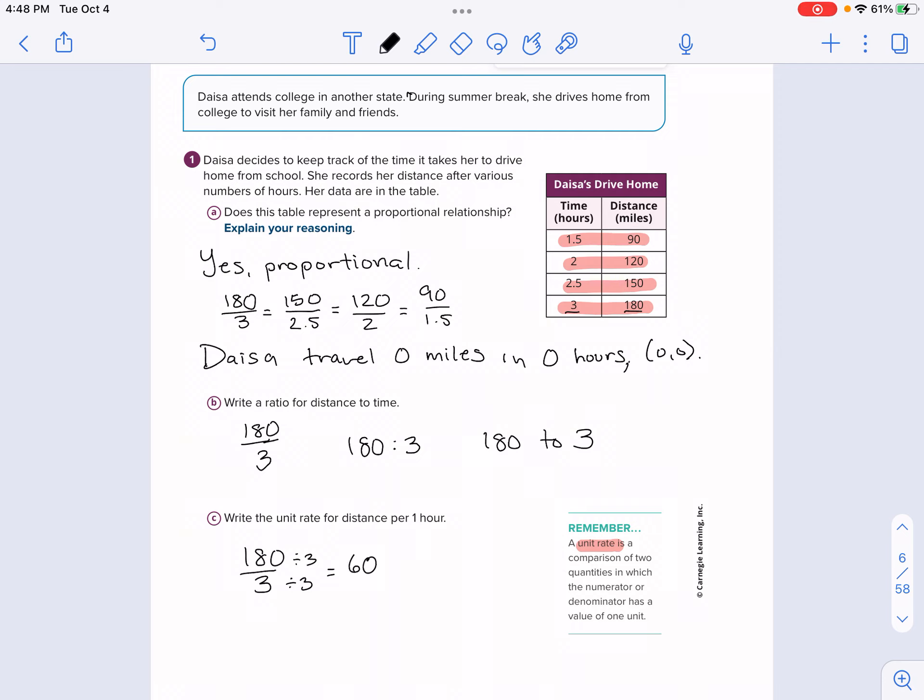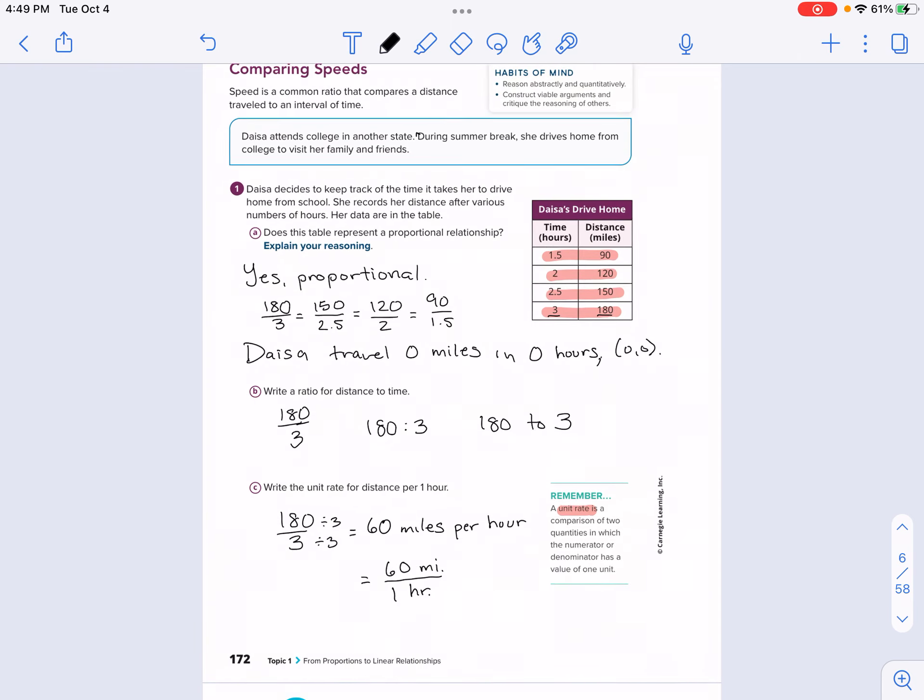If you're not sure what 180 divided by 3 is, maybe do 18. What's 18 divided by 3? That's 6. So add the zero there. It is 60. Now, 60, since the numerator was miles and the denominator was hours, this is 60 miles per hour. You can see it also as MPH. But we'll also write this as a fraction here. I'll put 60 miles, abbreviate miles there as MI over one hour, abbreviate that as HR.